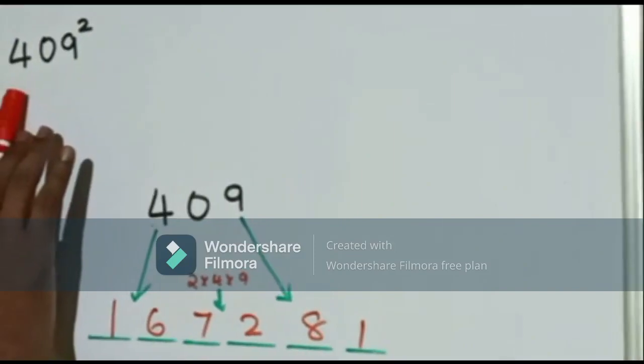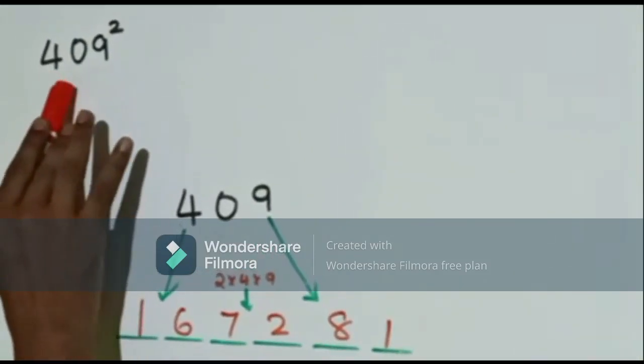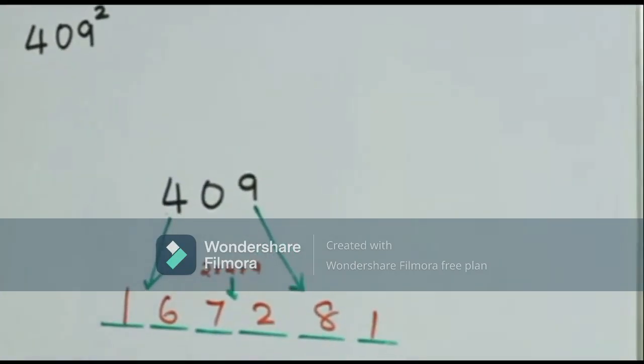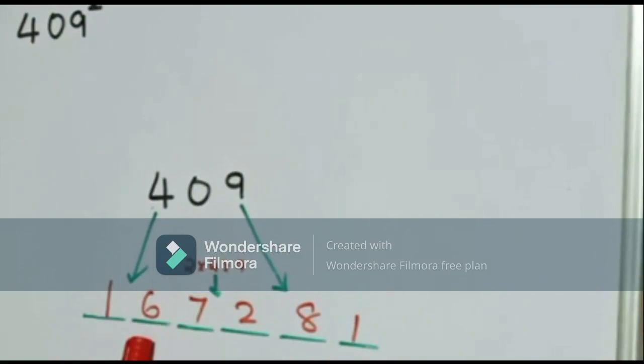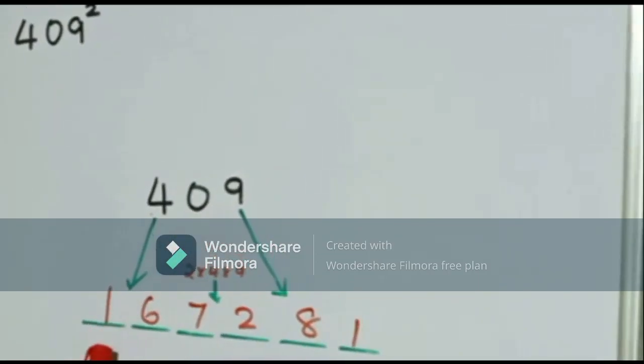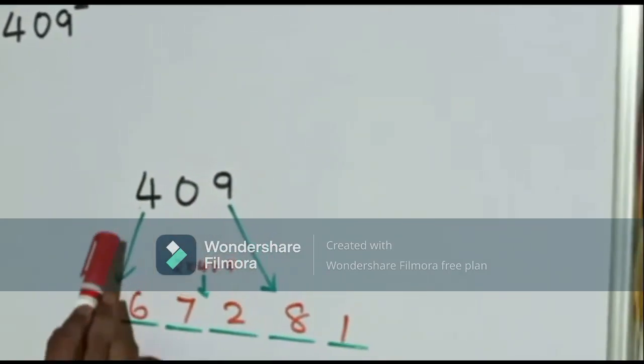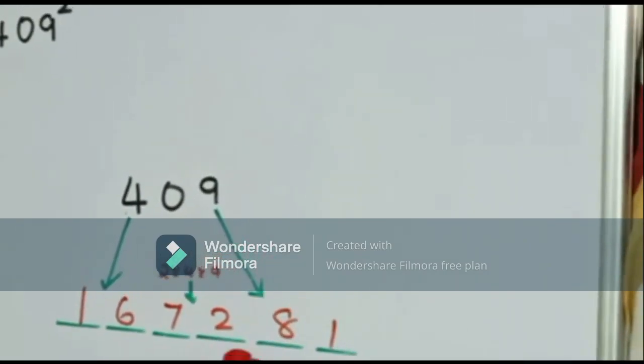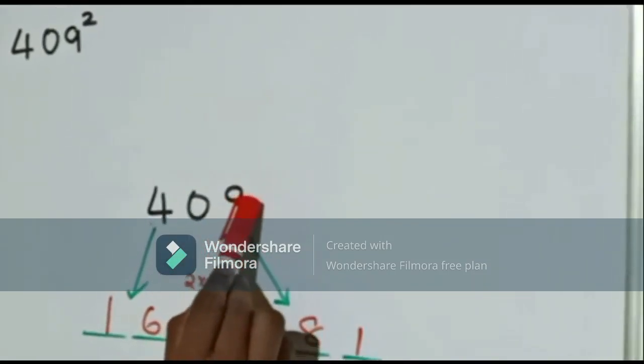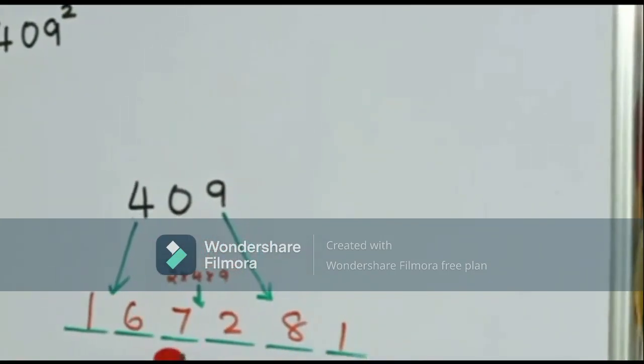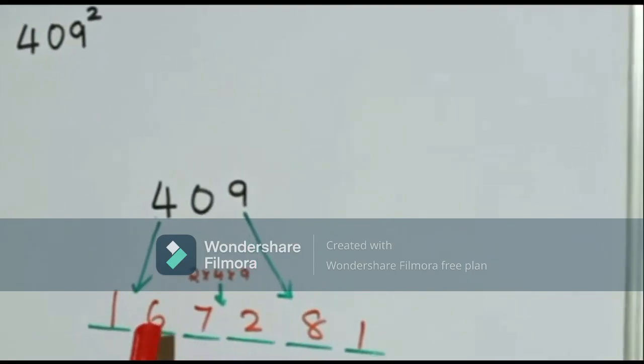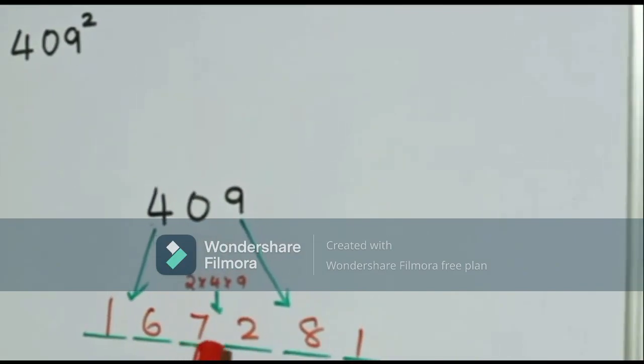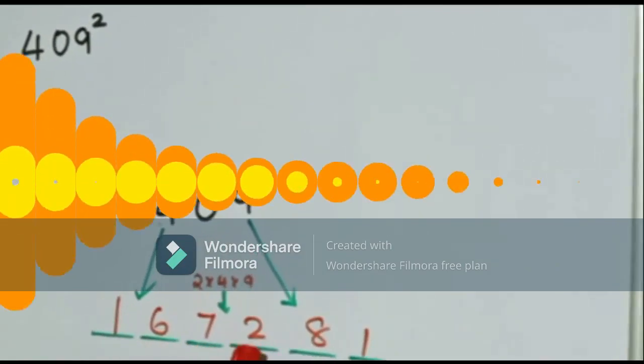With this trick, we can find the square of the 3-digit number, in which the tens digit is 0. We take the square of 409. The first 2 digits of the square of 409 is 16, which is the square of the first digit, which is 4. The last 2 digits of the answer will be the square of the last digit of the number, which is 9 square, which is 81. The middle 2 digits will be twice the product of the first and last term, which is 2 into 4×9, which is 72, and the answer is 167281.